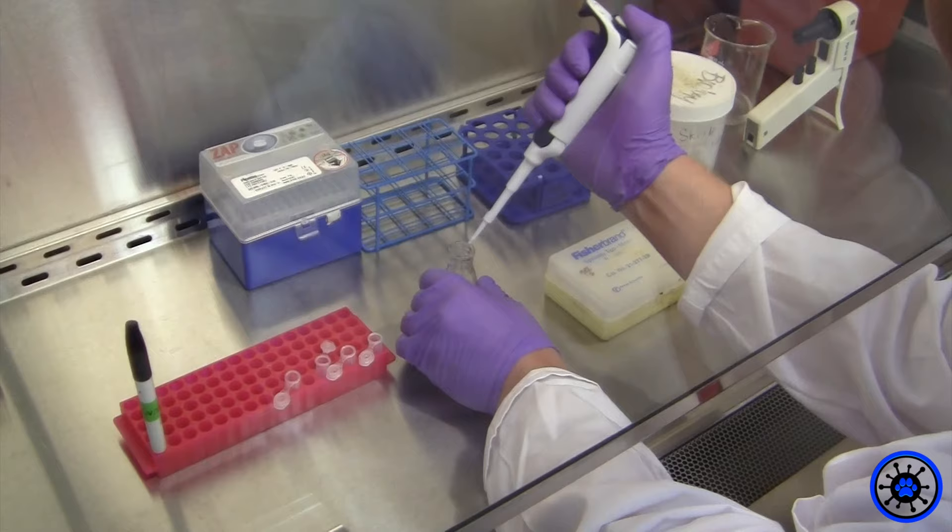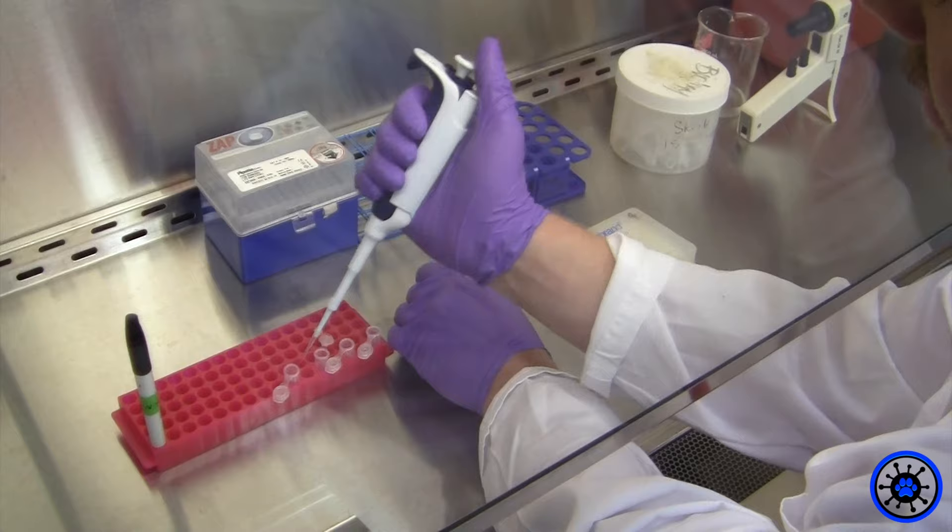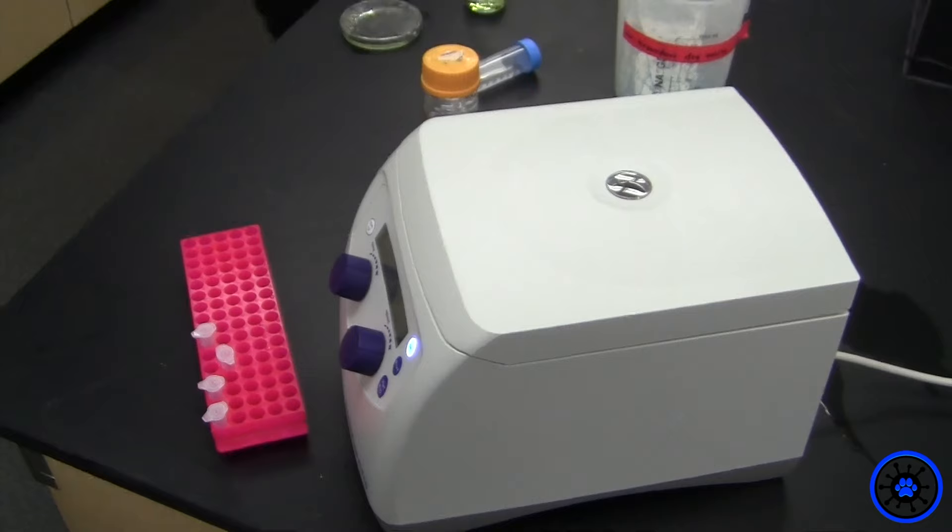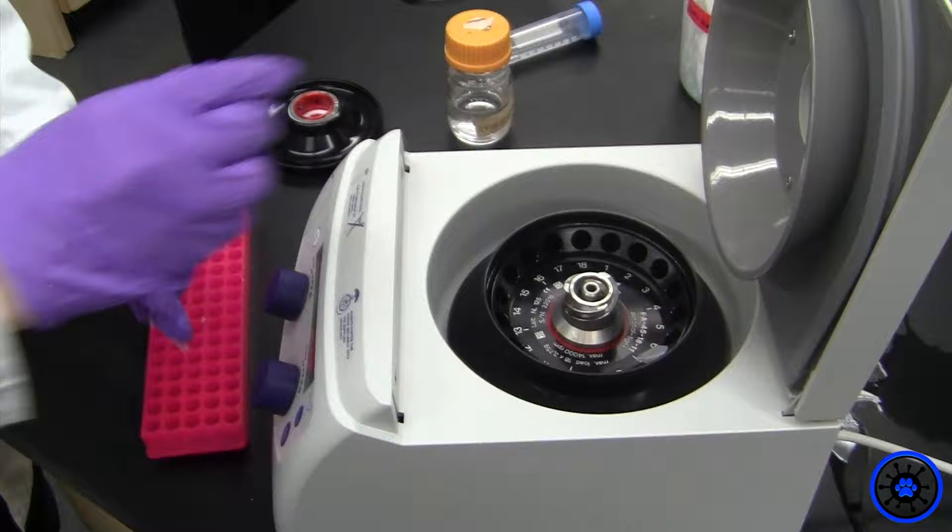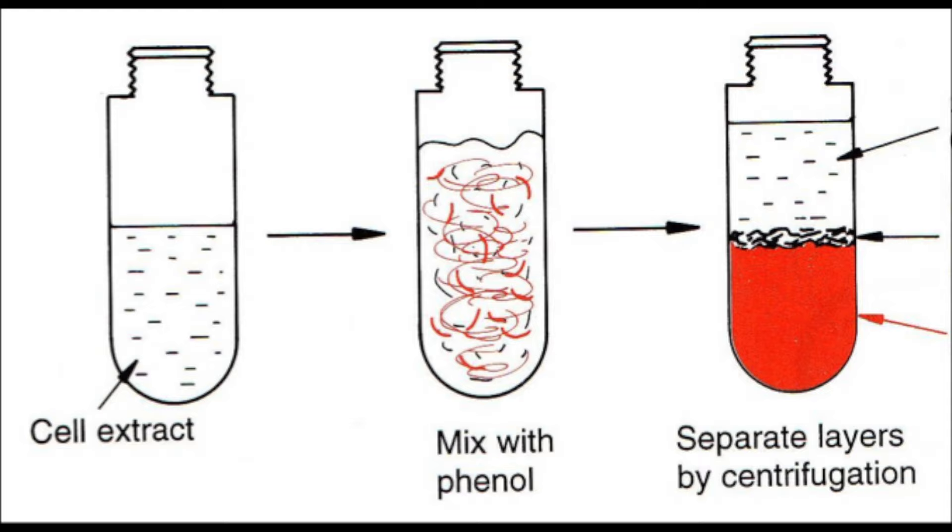Cells are lysed with the reagent trizol because it breaks down the cell membrane and cellular components without degrading RNA. DNA and cellular components were separated by centrifugation and cellular debris is removed.